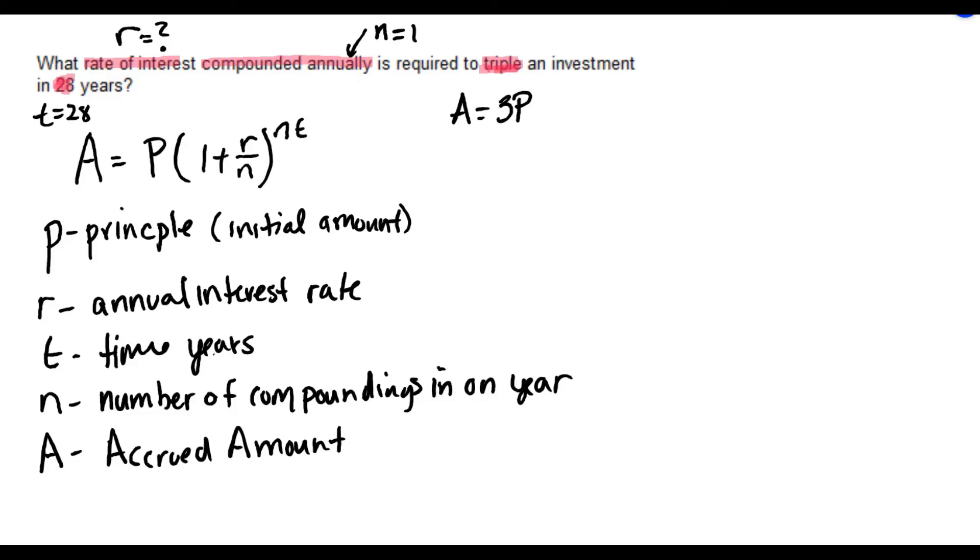Now with all this information, we should be able to substitute values into our formula and solve for our unknown R. So let's start with our formula. A equals P times 1 plus R over N to the NT.